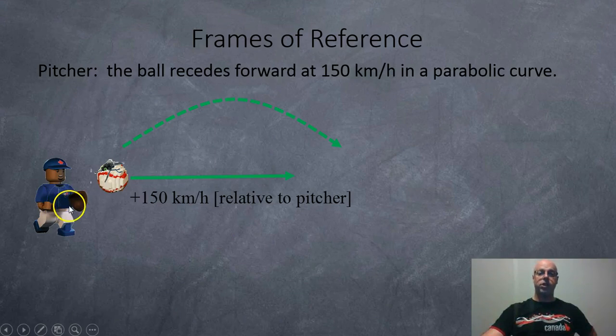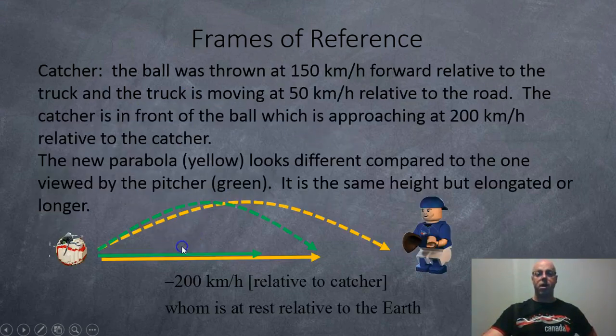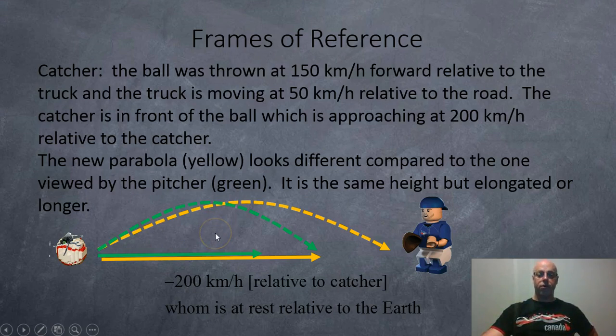So for the pitcher, the ball is moving away at 150 km per hour because the pitcher threw the ball from rest to 150 km per hour. And a nice little parallel, all projectiles make parabolic curves. So now, how about for the catcher? Well, the ball was moving at 50 because it was on the track, and it was moving at 150 because it was thrown that hard. So all together, it is now moving towards the catcher at 200 km per hour.